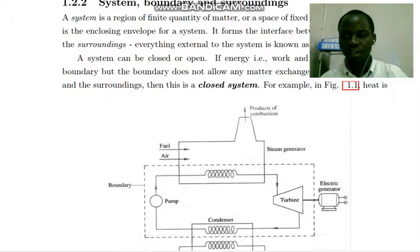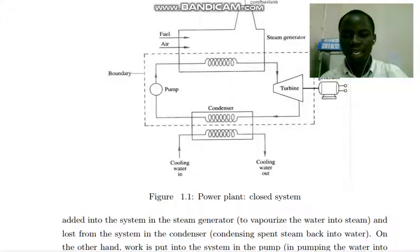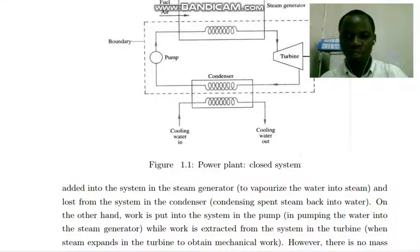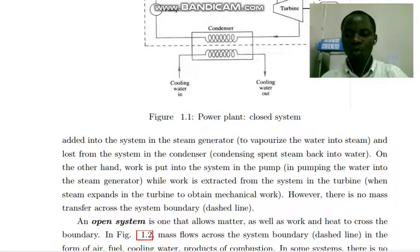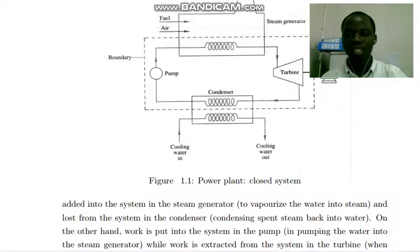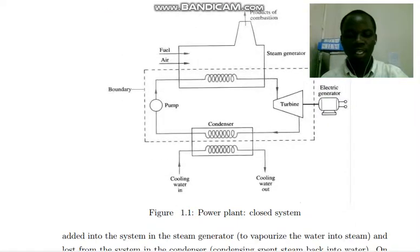This is indicated in figure 1.1. The heat is added to this system in the steam generator, which is then required to vaporize the water into steam, and the heat is lost from this system in the condenser by condensing the spent steam back into water. On the other hand, work is put into this system in the pump in pumping water into the steam generator, while work is extracted from this system in the turbine when the steam expands in the turbine to obtain mechanical work. However, there is no mass transfer across the system boundary as indicated by these dashed lines. So this shows that this system is a closed system.